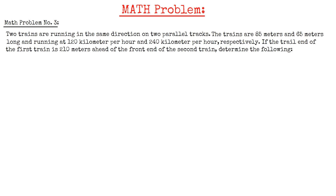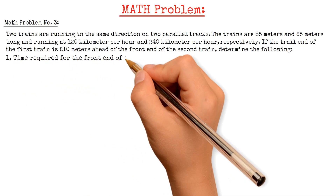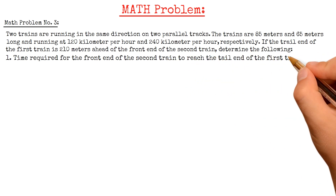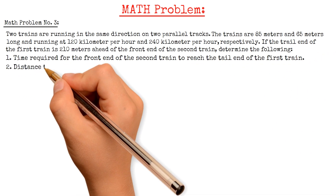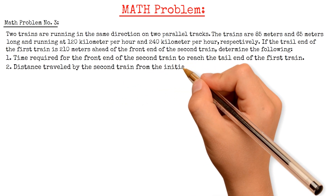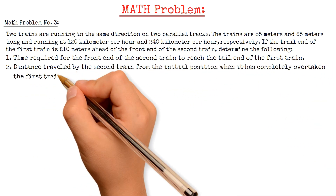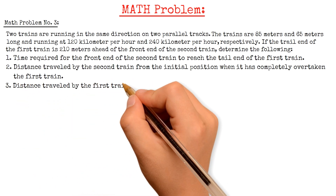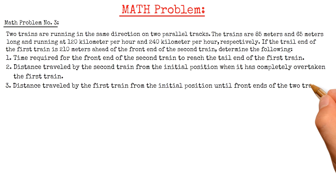Two trains are running in the same direction on two parallel tracks. The trains are 85 meters and 65 meters long and running at 120 km per hour and 240 km per hour respectively. If the tail end of the first train is 210 meters ahead of the front end of the second train, determine the following: first, the time required for the front end of the second train to reach the tail end of the first train; second, the distance traveled by the second train from the initial position when it has completely overtaken the first train; and third, the distance traveled by the first train from the initial position until the front ends of the two trains are abreast each other.